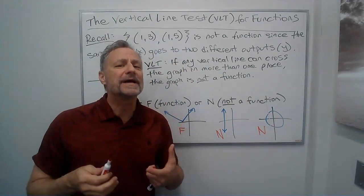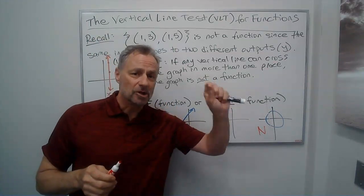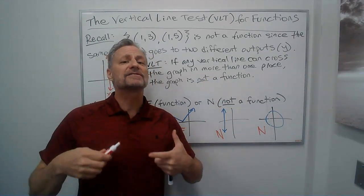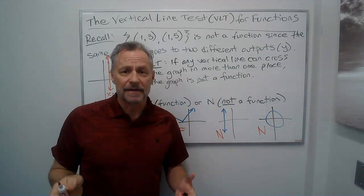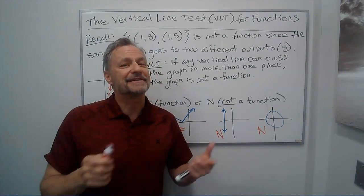It's a very quick and easy test to determine if a graph is a function or not. If any vertical line can cross it in more than one place, it's not a function and fails the vertical line test. But if you can't find one, then it's a function.